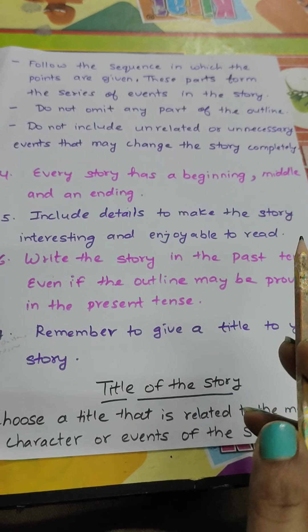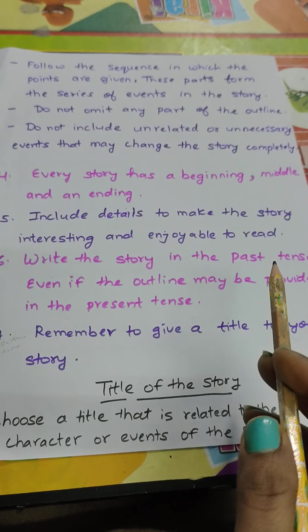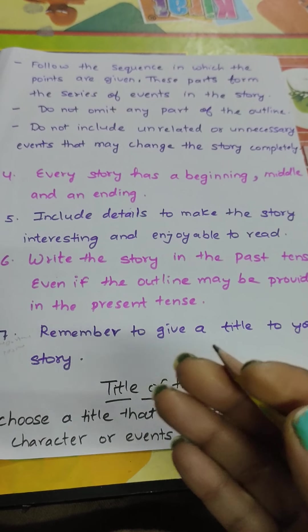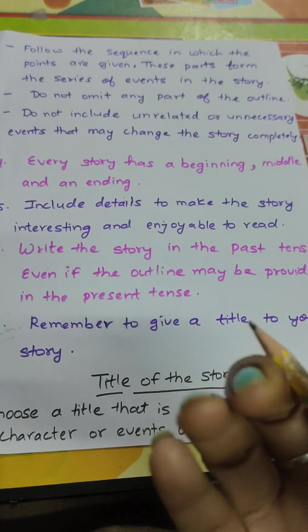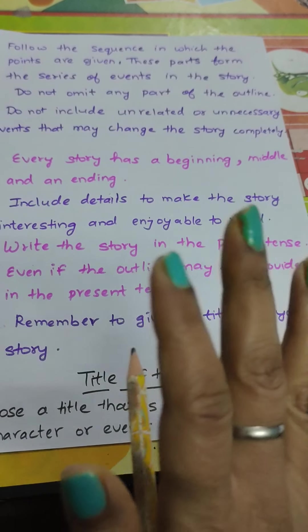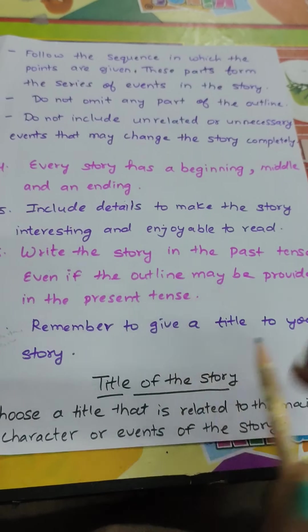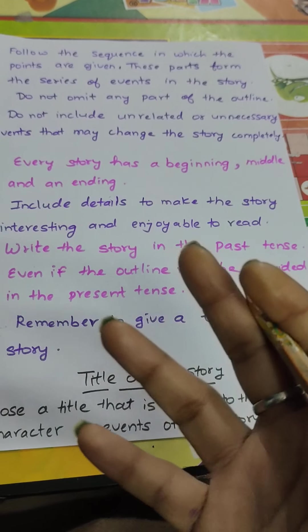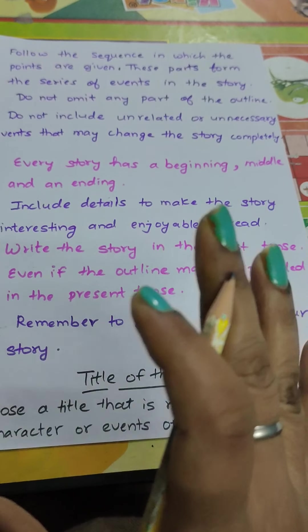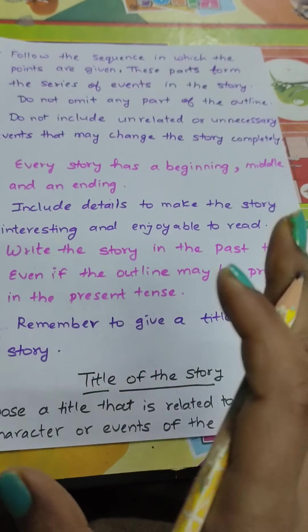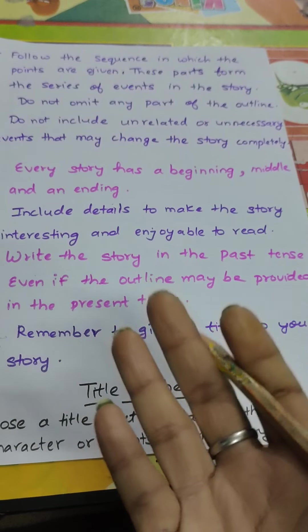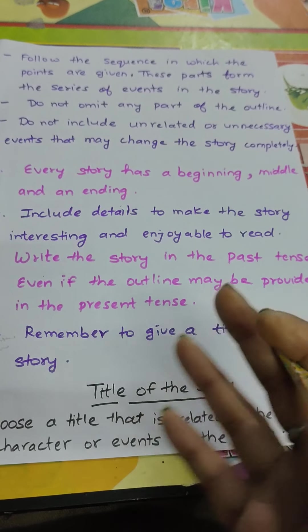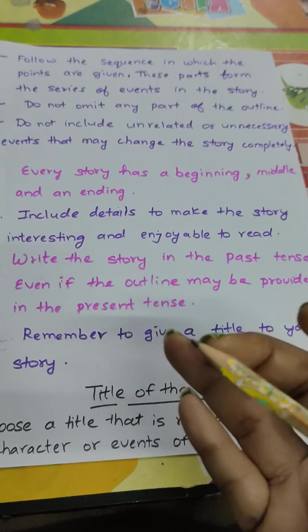Sixth: include details to make the story interesting and enjoyable to read. Add details that make the story interesting and enjoyable. Just like you watch movies — if a movie is not interesting or enjoyable, it feels boring and you won't want to watch it. Nobody likes a boring movie. Similarly, your story should also be interesting and enjoyable. Always add such details to make it engaging.